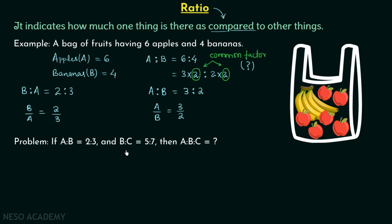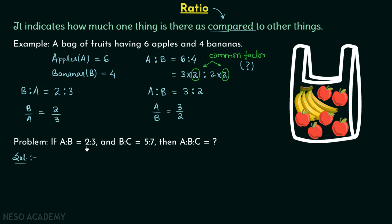Now we will move on to our example problem. In this problem, A ratio B is equal to 2 ratio 3, and B ratio C is equal to 5 ratio 7. We need to find A ratio B ratio C. In the first ratio we have A and B; in the second ratio we have B and C. We can see that B is common in the two ratios, but B in the first ratio is 3 and B in the second ratio is 5, and 3 is not equal to 5. Therefore we cannot write down A ratio B ratio C directly.